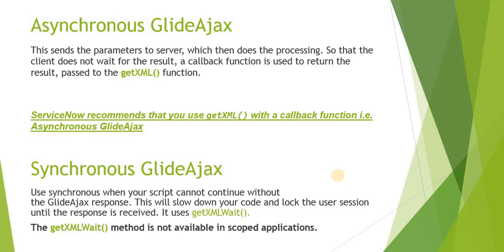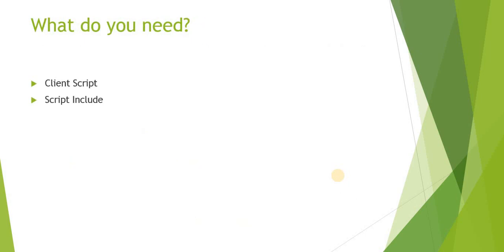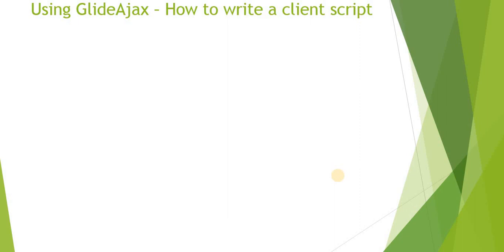ServiceNow recommends you use getXML — that is the asynchronous Glide Ajax — because it enhances the user experience and does not block your form. To build a Glide Ajax you need two things. First is the client script, which runs on the browser or client side. Second is the script include. We will be calling script include functions from the client script. Script includes are server-side code which fetch data from the database and return the data to the client script.